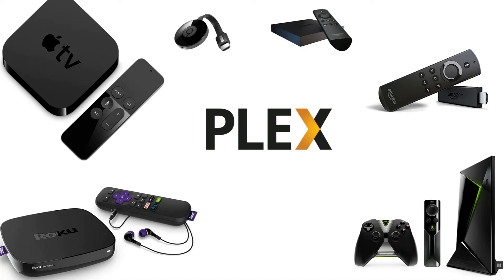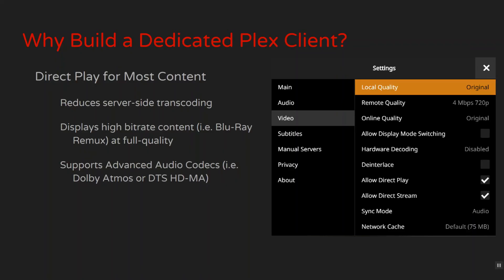There are several reasons. The first is shared by the Nvidia Shield, which is the ability to direct play most content. The majority of Plex clients simply cannot handle advanced audio codecs, such as Dolby Atmos or DTS HD Master, nor can they handle playback of full quality Blu-ray rips.